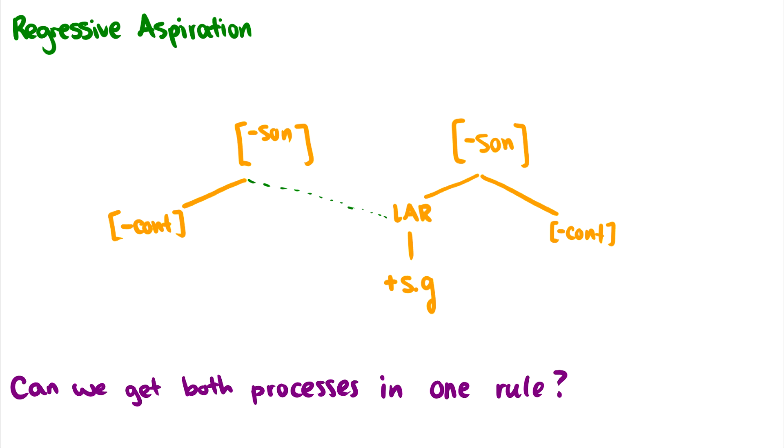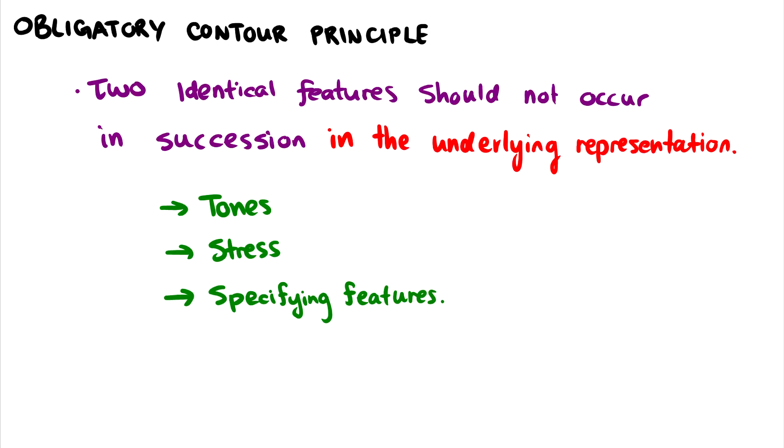So that is spreading and delinking. What I would like to talk about really quick is the obligatory contour principle since it may show up in the future. Essentially what it says is that two identical features should not occur in succession in the underlying representation. This is why we have a voiceless and a voiced becoming a voiced and a voiced, instead of having two voiced in the underlying representation. Because the obligatory contour principle states that if two sounds ever share these same properties, it should be done via spreading or delinking and not in the underlying representation. And we'll see this a little bit more with tones, stress, and other specifying features.